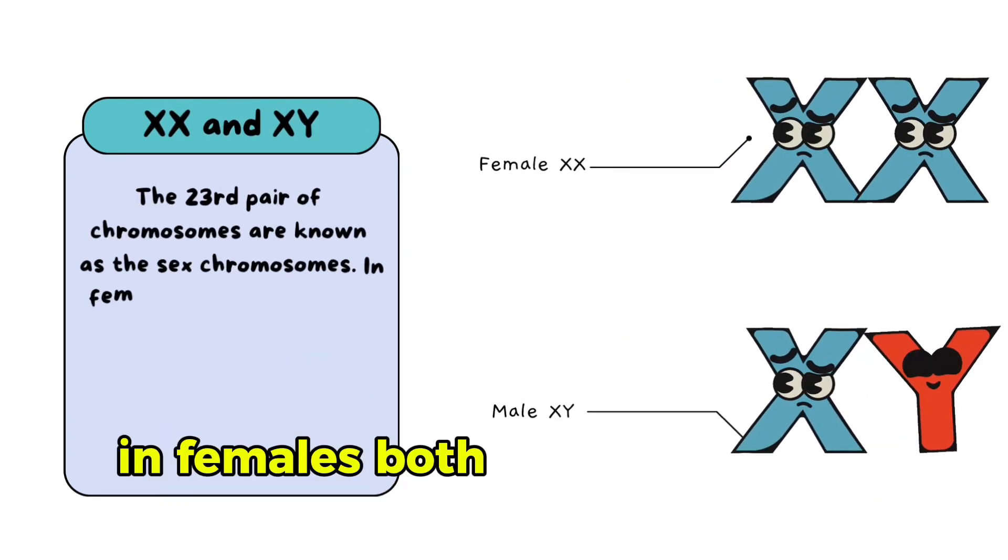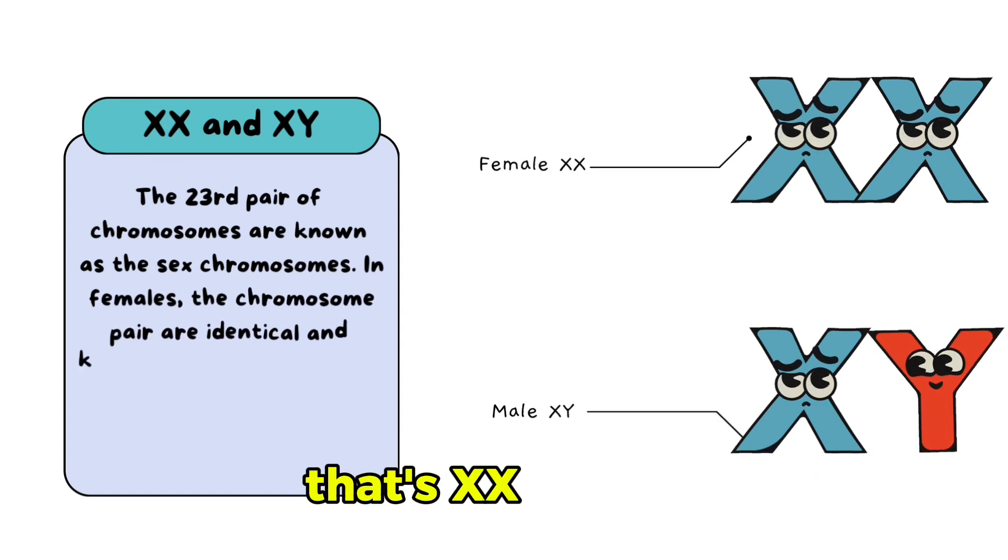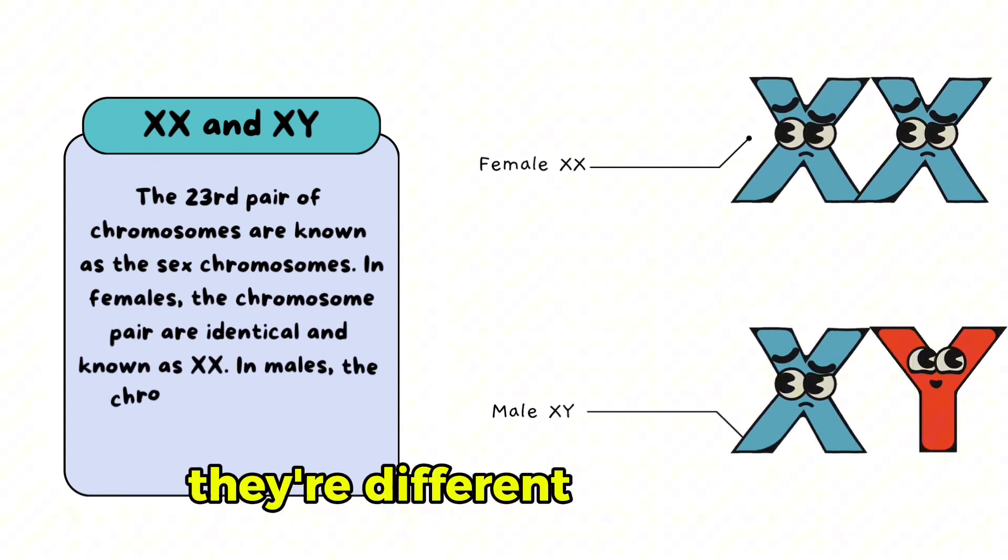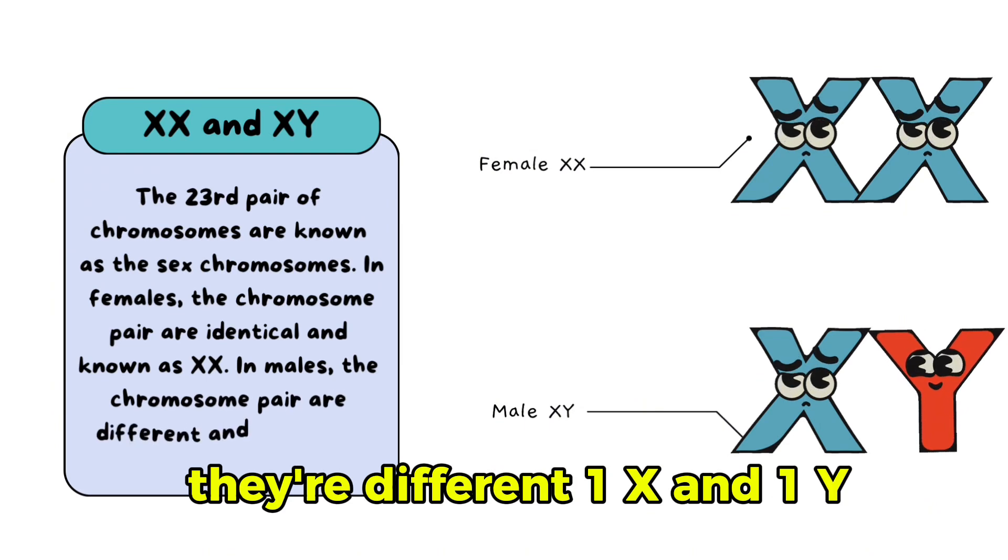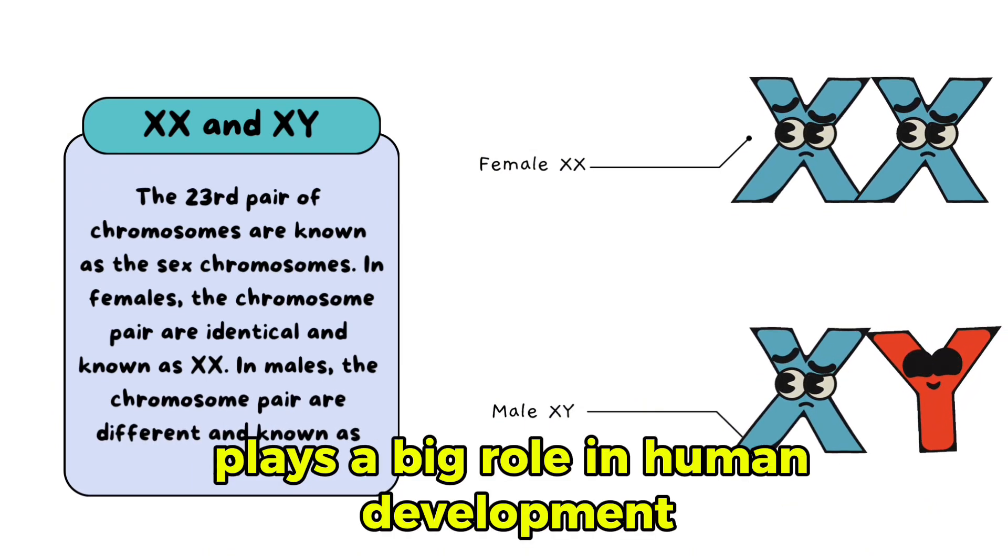In females, both chromosomes are the same, that's XX. In males, they're different, one X and one Y. This tiny difference plays a big role in human development.